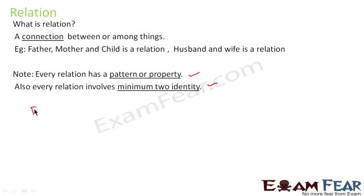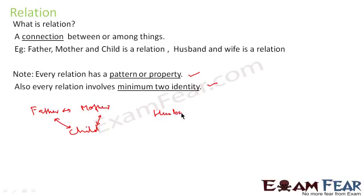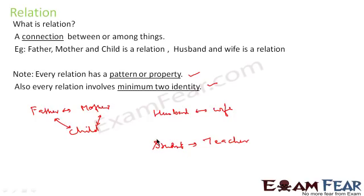When I say father and mother, there is a relation between them. If I include a child, there is a relation between father, mother, and child — between father and child, and between mother and child. Similarly, husband and wife have a relationship. There is also a relationship between student and teacher, and that relationship is that the teacher teaches the student.